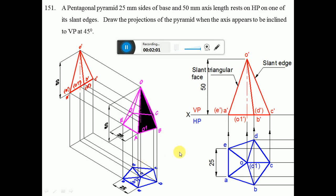When you look from the front view, we can see the height of the pyramid which is 50mm. A, B, C is near to the observer, so A dash, B dash, C dash is visible. D and E are away from the observer, so D dash and E dash become invisible. O1 dash is hidden by the edge of A, B, so it becomes invisible. We join O dash to A dash, O to B and O to C, but O to D and O to E are invisible.